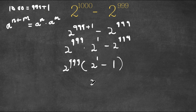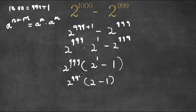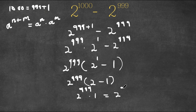Now 2 to the power of 1 is simply 2. So now we have 2 minus 1, times 2 to the power of 999. That gives us 1 times 2 to the power of 999, which is simply equal to 2 to the power of 999. So this is our answer.